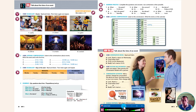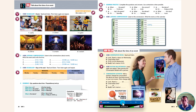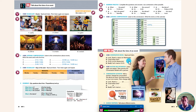Read and listen. Look, there's a dance on Wednesday. Great, what time? 10.30. At Pat's restaurant. Really? Let's meet at 10.15. Listen again and repeat. Then practice the conversation model with a partner.